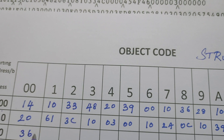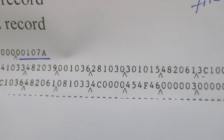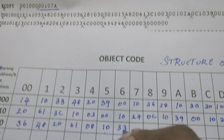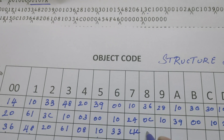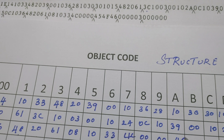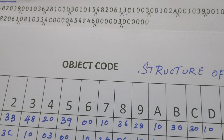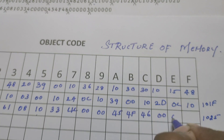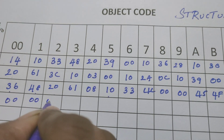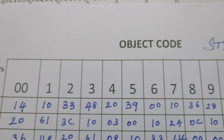Continuing to write the second text record into memory: 0C1036, 482061, 081033, 4C0000, 454F46, 000003, 000000. The second text record is now completely written into the memory.